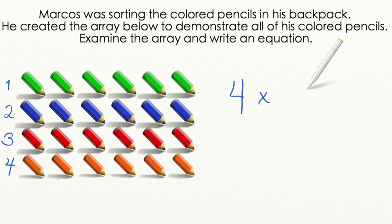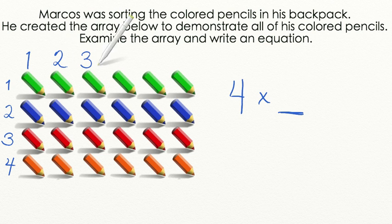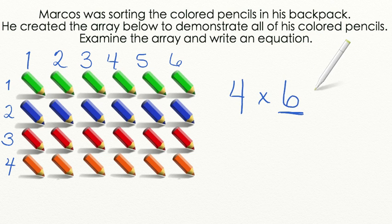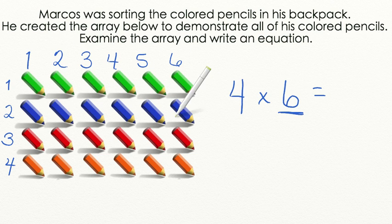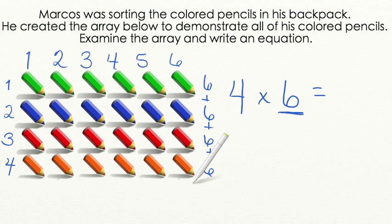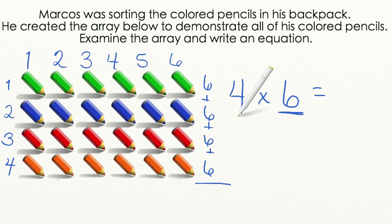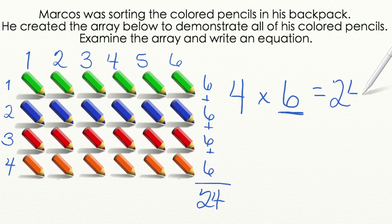Now we're going to count how many columns we have — that's going to be the second number in our equation. We have 1, 2, 3, 4, 5, 6. There are 6 columns in all. So now our equation is 4 times 6, or 4 groups of 6 colored pencils each. If we add up each of our different rows, we have 6 plus 6 plus 6 plus 6, because multiplication is repeated addition. And if we add 6 together 4 times, we get 24. So the product of 4 times 6 is equal to 24. That means there are 24 colored pencils in all.